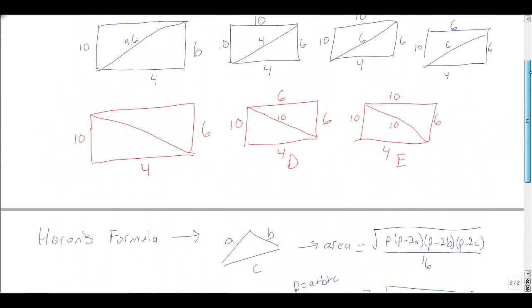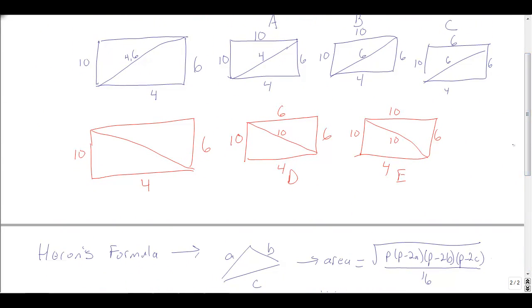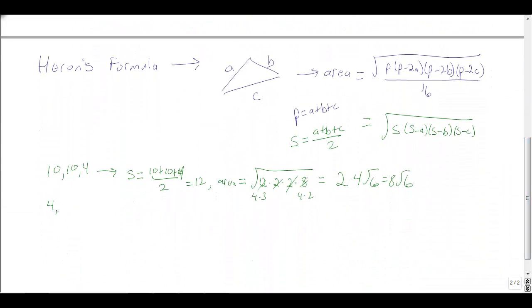For triangle with sides 4, 4, 6: S = (4 + 4 + 6) / 2 = 7. Area = sqrt(7 × 3 × 3 × 1) = 3√7.